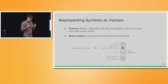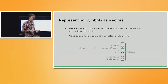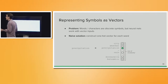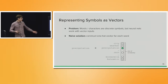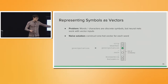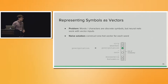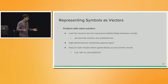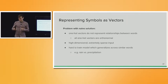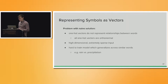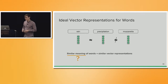Let's look at representing symbols as vectors. The problem is that we have something symbolic, like a character or a word, and we want to feed this into a neural network which works with vector input. A naive solution is to construct a one-hot vector — an indicator vector for any given word in a vector space as big as the vocabulary size, which could be hundreds of thousands or millions of entries. An obvious problem is that one-hot vectors do not represent any kind of relationship between different vectors; all one-hot vectors are orthogonal to one another. They are high-dimensional and extremely sparse, making it hard to train a model that generalizes across similar words like precipitation and rain.